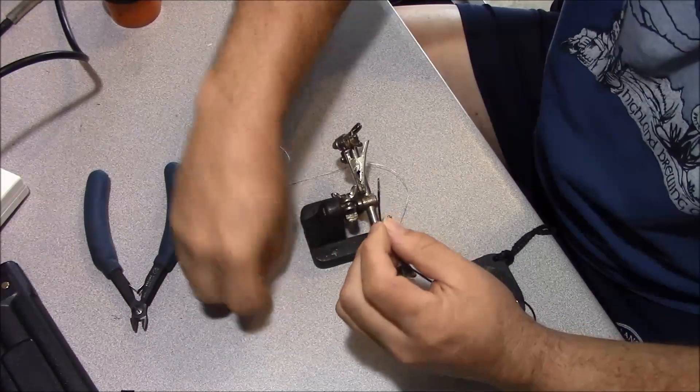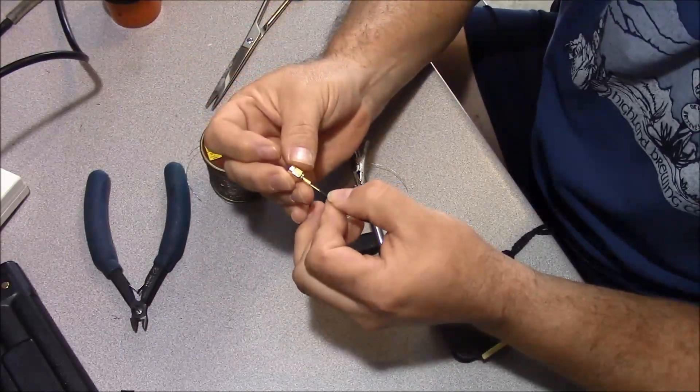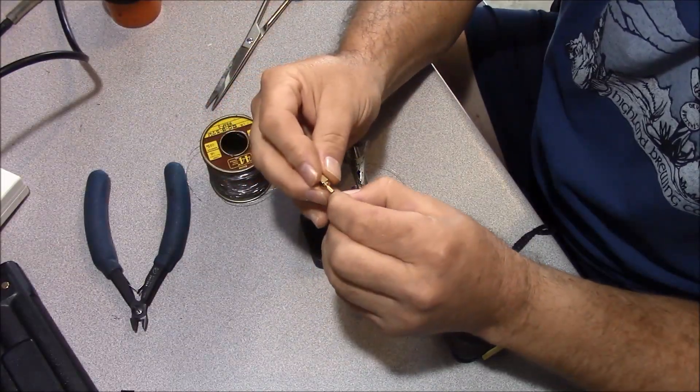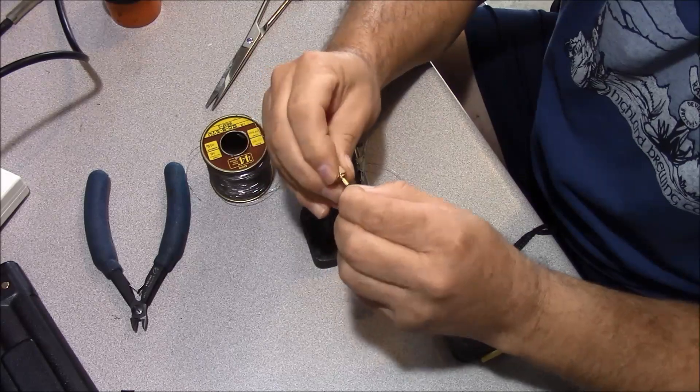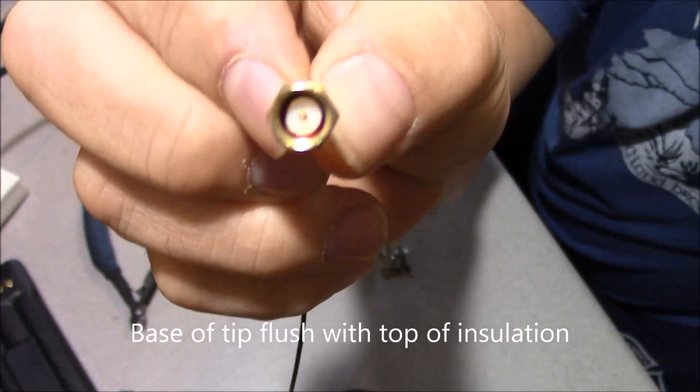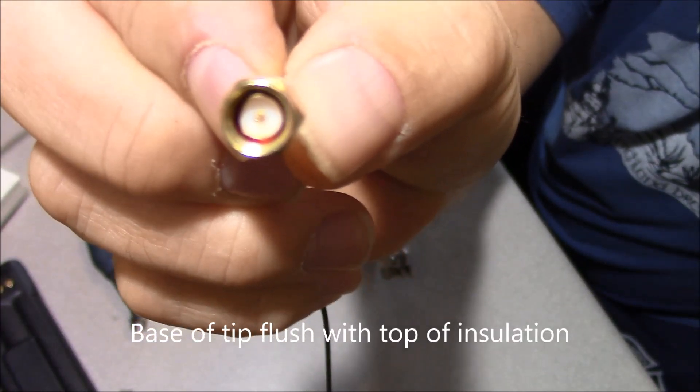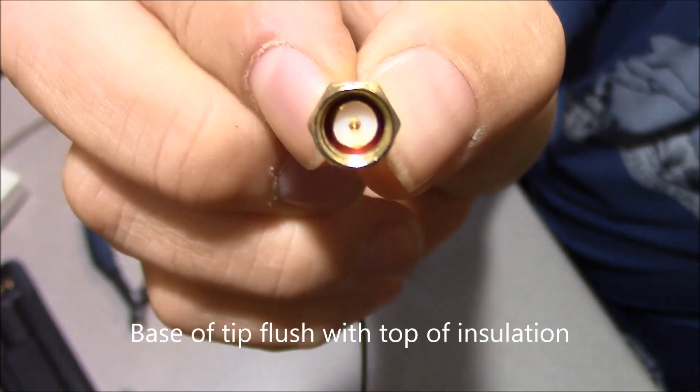Once your work is cooled, go ahead and take your body of your SMA connector and put your center pin in. You're going to have to push it into place. When it's properly assembled, you'll see your center pin. The base of it is even with the insulation.